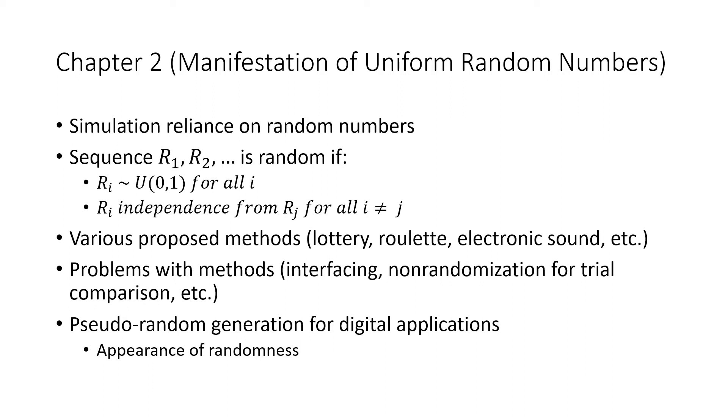The chapter starts out by addressing how simulation or Monte Carlo experiments rely on random number generation. We know that a sequence R1, R2, and so on is random if they follow the two rules included on the screen. Fairly straightforward.